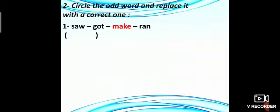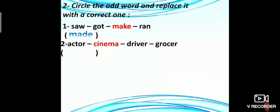The second one is circle the odd word and replace it with a correct one. Saw, got, make, ran. These are irregular verbs in past form, and make is infinitive. So it's the odd one, and the replaced one will be any irregular verb in past form, such like made.